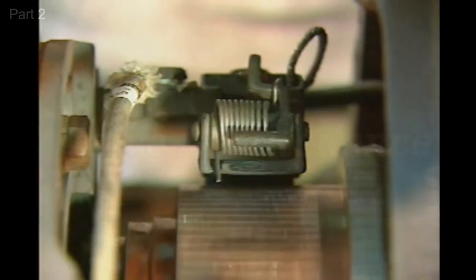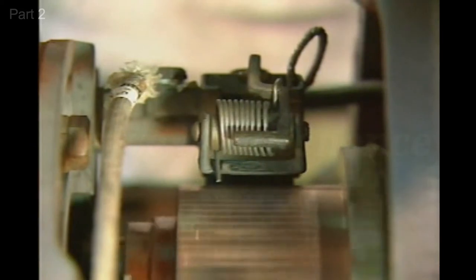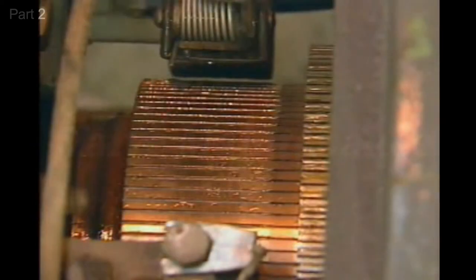The purpose of a commutator in a DC motor is to provide the sliding connection points from the brushes to the current carrying conductors in the armature. A commutator in good condition has a smooth, highly polished surface.